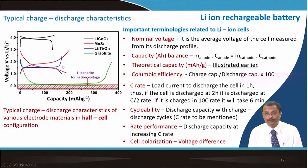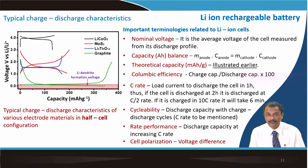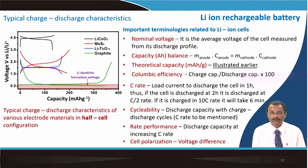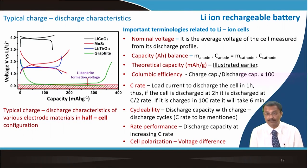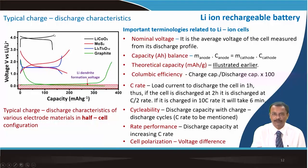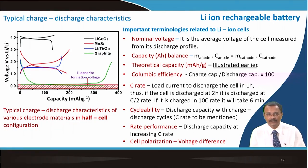Rate performance is also important: if you discharge or charge the battery at a higher constant current, the capacity progressively reduces as current increases. Cell polarization is basically the voltage difference between charge and discharge. These are the important terminologies pertinent to the lithium-ion cell.